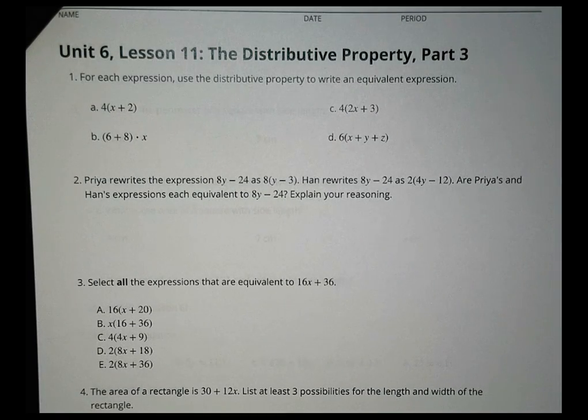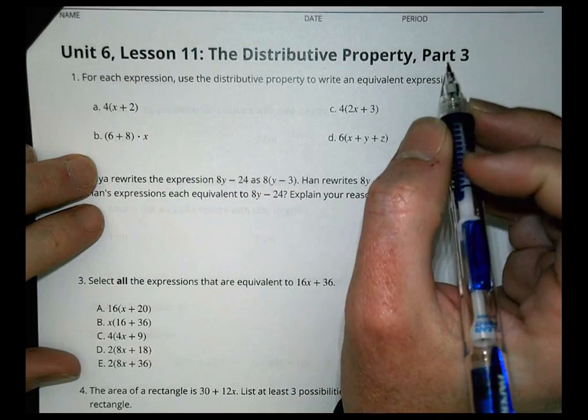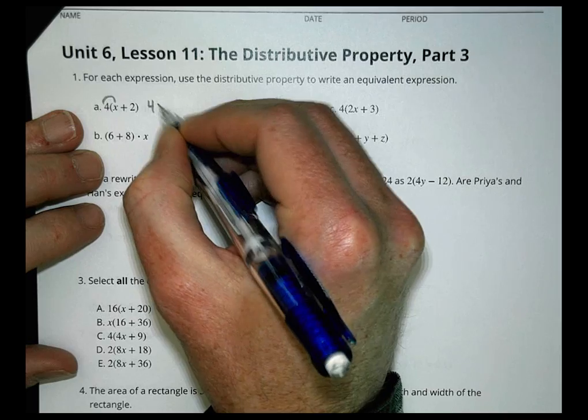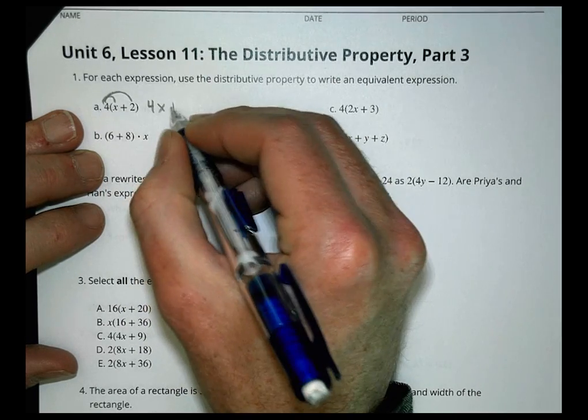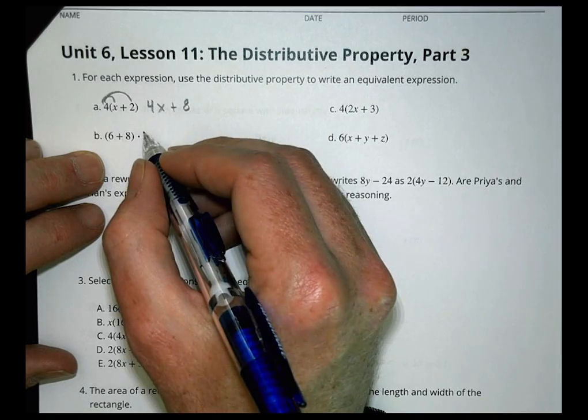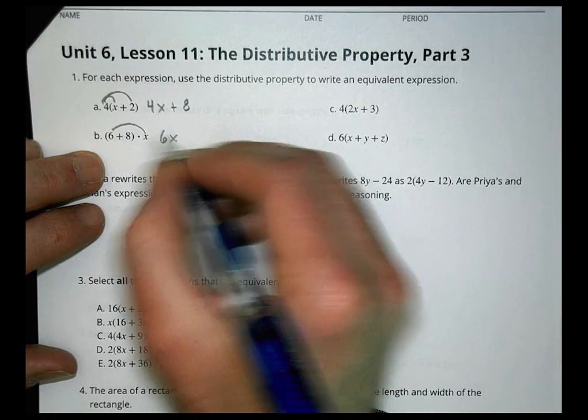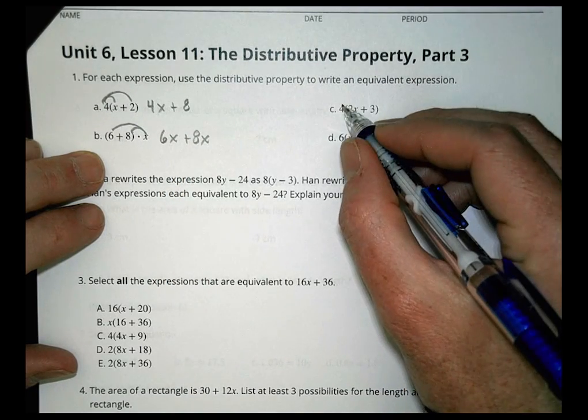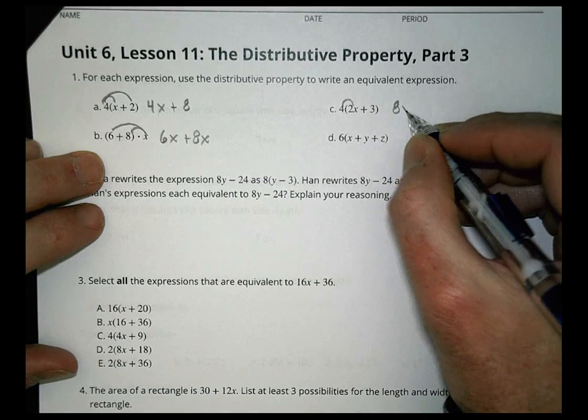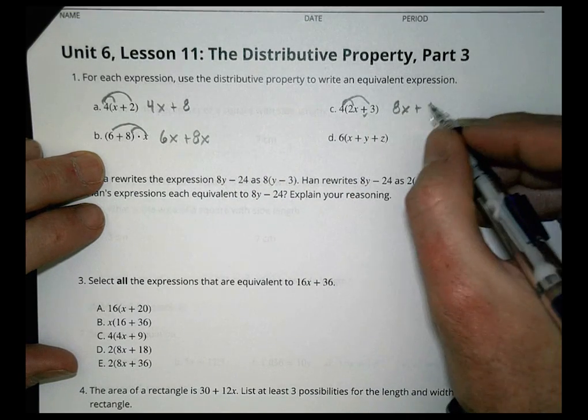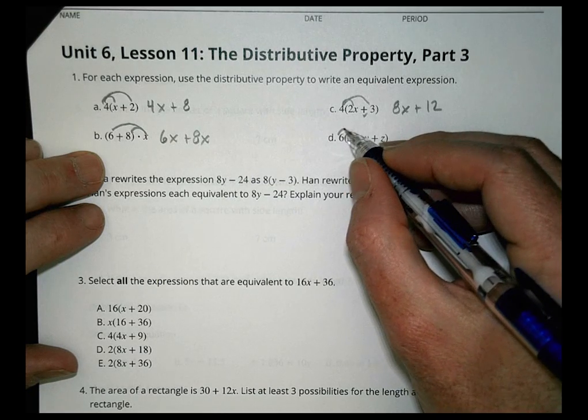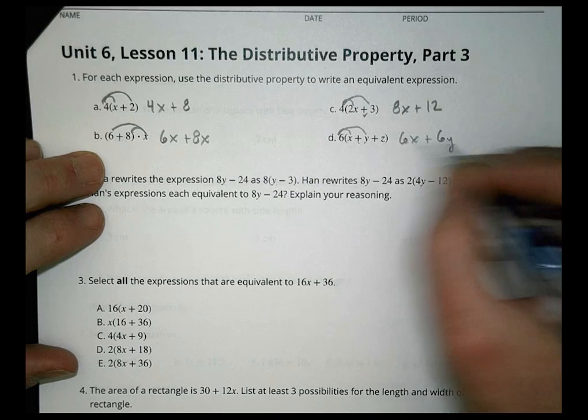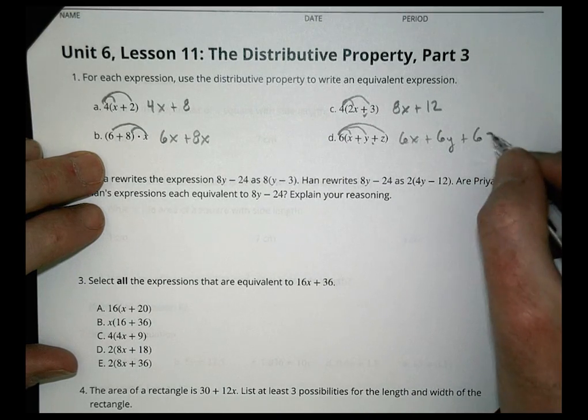Alright, homework check for Lesson 11, Math 6, Unit 6. For each expression, use the distributive property to write an equivalent expression. 4 times x is 4x, and 4 times 2 is 8. Over here, x times 6 is 6x, keep the plus sign, and x times 8 is 8x. Over here, 4 times 2 is 8 and keep the x there, plus 4 times 3 is 12. And we do 6 times x is 6x plus 6 times y is 6y plus 6 times z is 6z.